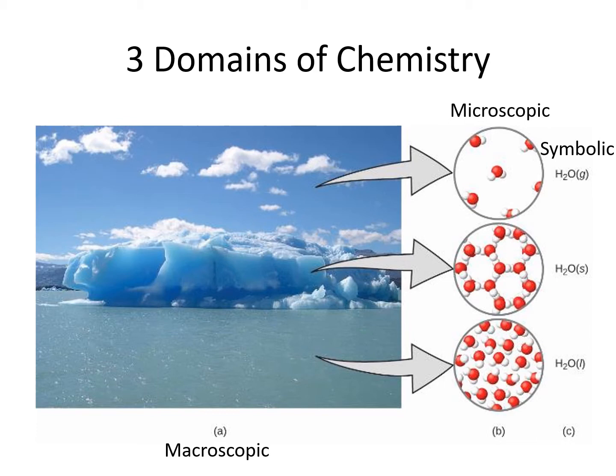The difference between the three phases is where those water molecules are positioned. In solid water, the molecules are close together and ordered into hexagonal shapes. In liquid water, the molecules are more jumbled around. In water vapor, the molecules are much farther apart.